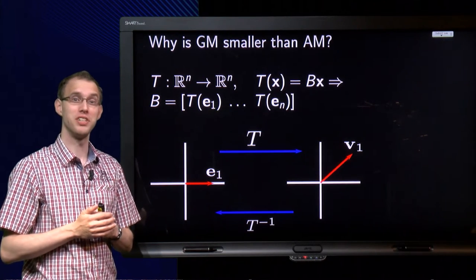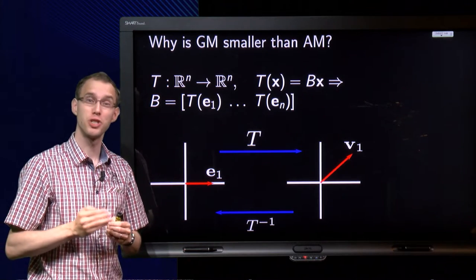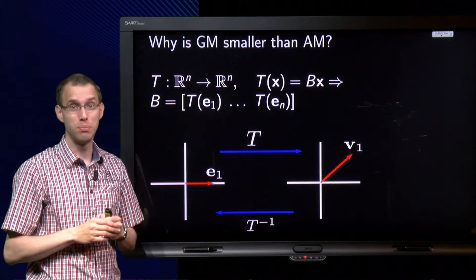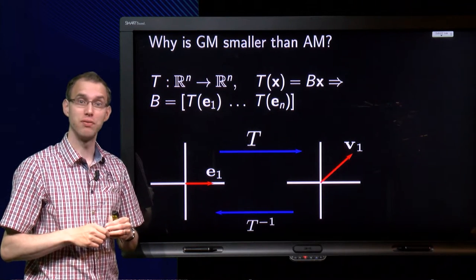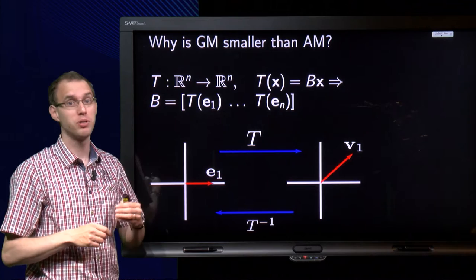Why is the geometric multiplicity of an eigenvalue always smaller than the algebraic multiplicity? The sum of geometric multiplicities of the eigenvalues of an n by n matrix is at most n, of course.